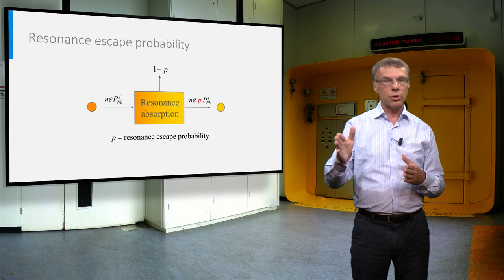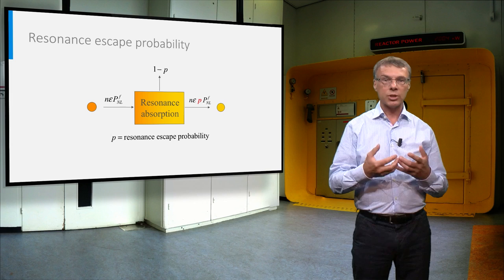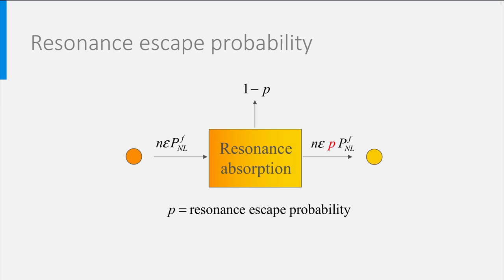As mentioned before, the neutrons that slow down have to cross the resonance region of uranium-238 in the fuel. A certain fraction of the neutrons will be captured, while a fraction p, called the resonance escape probability, will survive the resonance range.